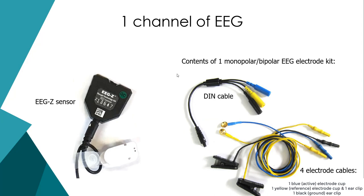Let me give you an introduction to the actual EEG sensor before I put it on myself. For this training example, we're going to focus on one channel of EEG, one sensor of EEG. I'm going to focus on a monopolar referential montage. I'm going to be using an EEG-Z sensor that links via a DIN cable and splits from one cable into three. Every single channel of EEG at minimum requires these three electrodes. Sometimes we share electrodes with other EEG sensors because we want the same ground or reference, but at minimum there are always three sites.